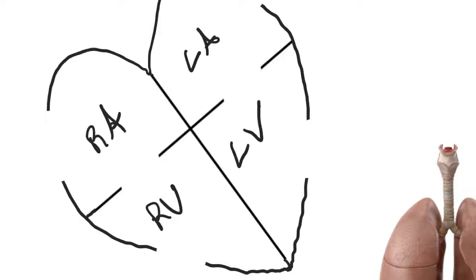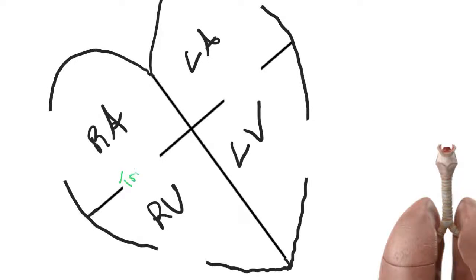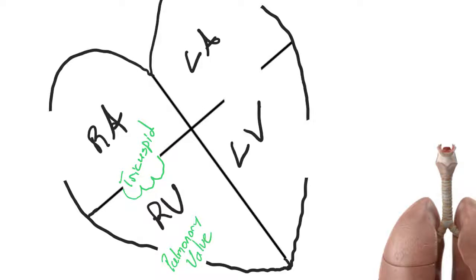The first valve is called the tricuspid valve. The tricuspid valve has three cusps and sits between the right atrium and the right ventricle, preventing backflow between those two chambers. We also have the pulmonary valve, which sits between the pulmonary artery and the right ventricle. Between the left atria and the left ventricle we have the mitral valve, and the valve preventing backflow from the aorta back into the left ventricle is the aortic valve.